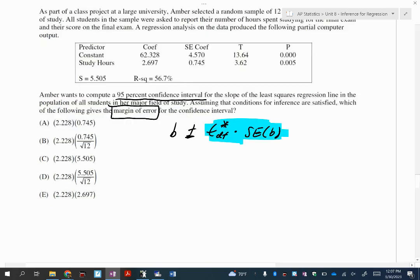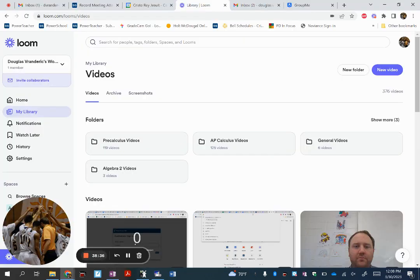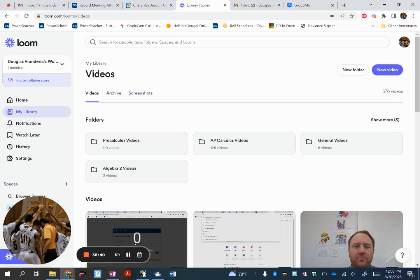All right, so do I care about the 2.697? I do not in this case. Look at all my answer choices for T star, they're all the same. So I know what T star is, that's nice. All right, and then go to your output, what's the standard error? 0.745, so it's A. Uh-oh, don't do it.